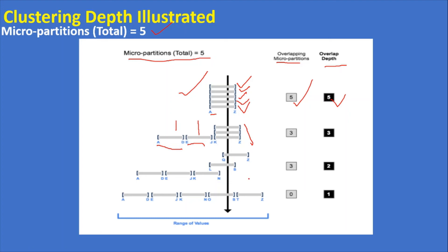In the final example, there are five partitions with no overlap: A to D, E to J, K to N, O to S, and T to Z each in their own micro-partition. Overlapping micro-partitions are zero and overlap depth is one. As mentioned, if a table has micro-partitions the depth is at least one; only an empty table has overlap depth of zero.